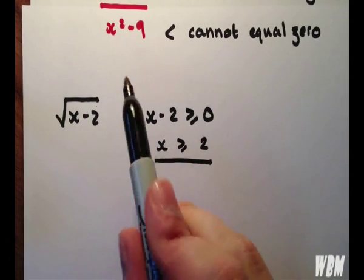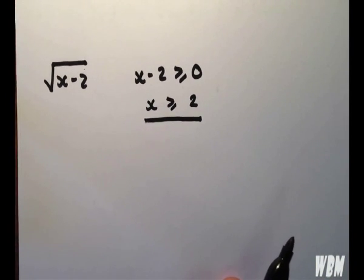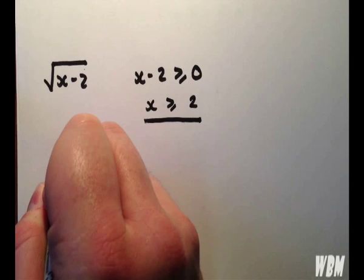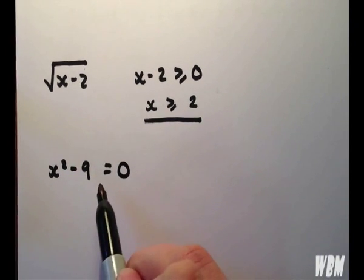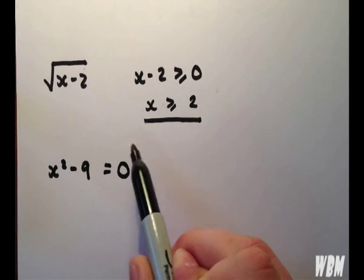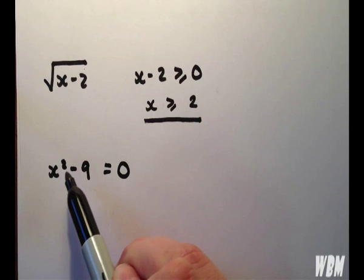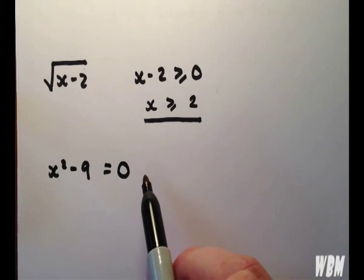Now, the denominator reads x squared minus 9. We consider this equal to 0 because we can have a negative denominator, but we just can't have 0, so we need to find the numbers that incur the 0 and eradicate them from the domain.